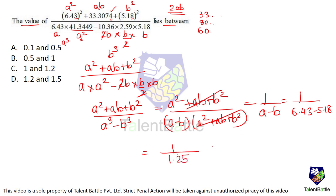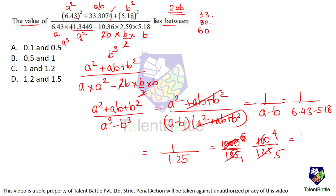1 upon 1.25 comes out to be 100 upon 125. That comes out to be 0.8. Now, 0.8 lies between option B, that is 0.5 and 1.